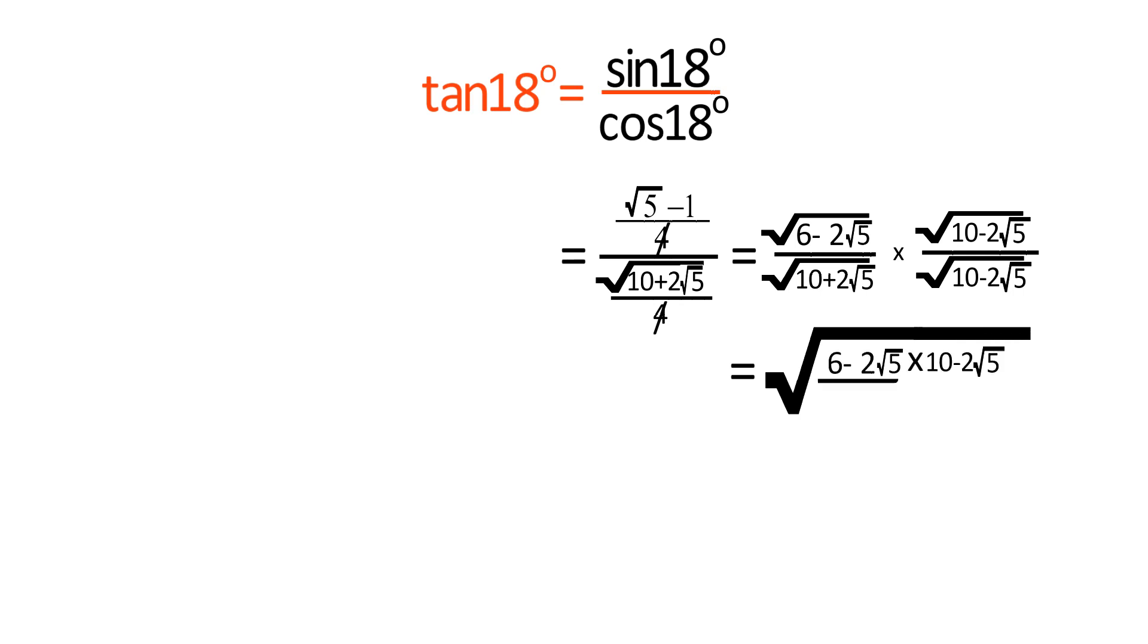After multiplying and solving, we get tangent 18 degrees equals square root of 1 minus 2 by root 5.